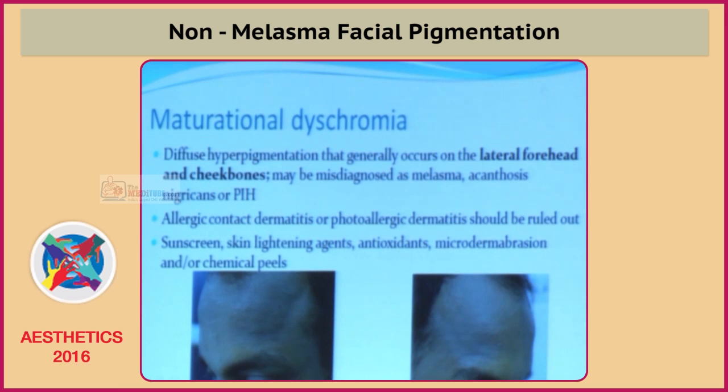Maturational dyschromia affects the middle to elderly age group. The lateral forehead and cheekbones are the common areas, but there is no evidence to suggest acanthosis nigricans. The difference is basically the rugosity of the skin, which is not present in maturational dyschromia and which is present in facial acanthosis. Now, is maturational dyschromia an early part of facial acanthosis nigricans? That is something we are not very sure of. But in most cases of facial acanthosis nigricans, you don't see the typical histopathologic features of acanthosis nigricans.